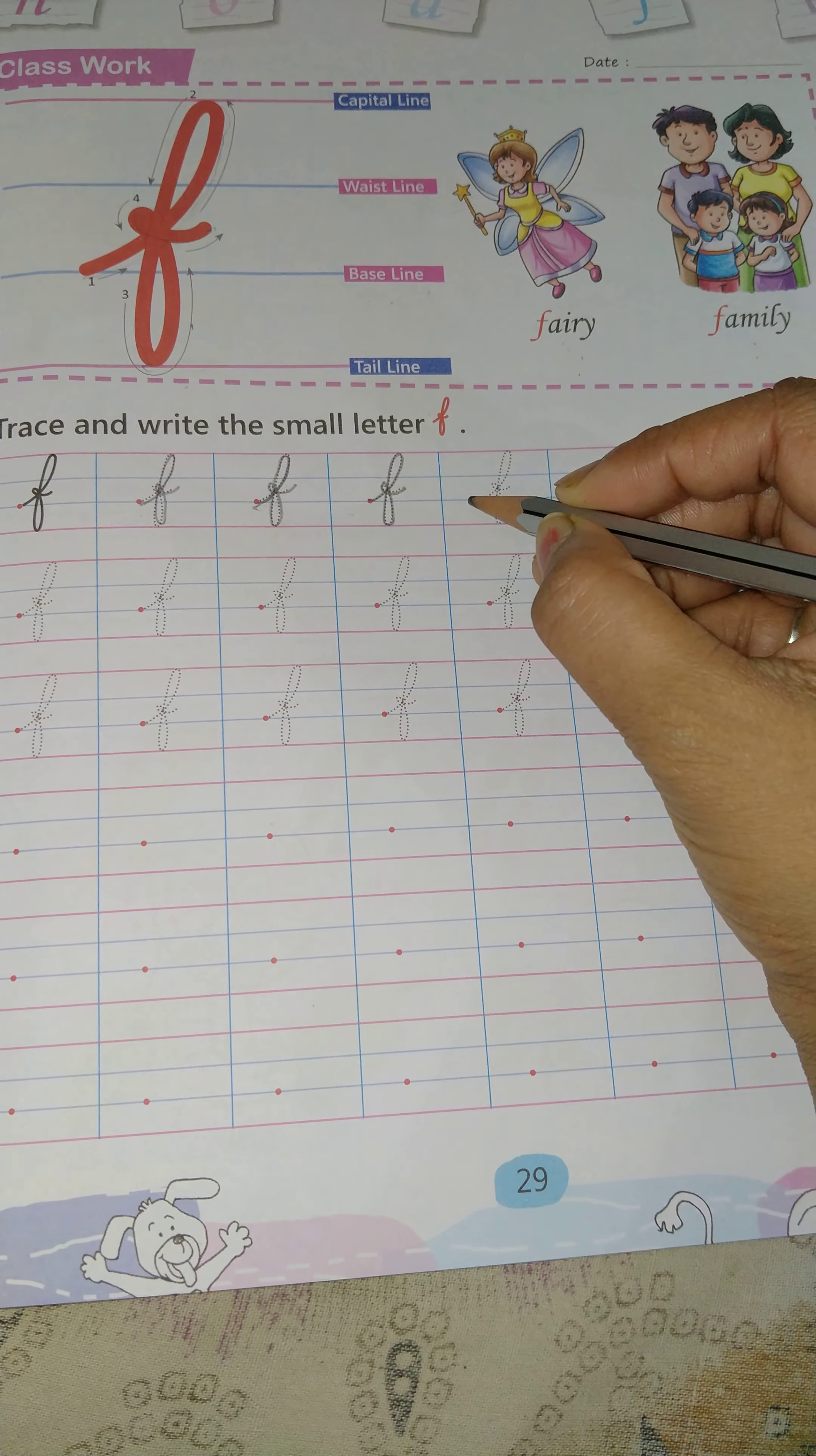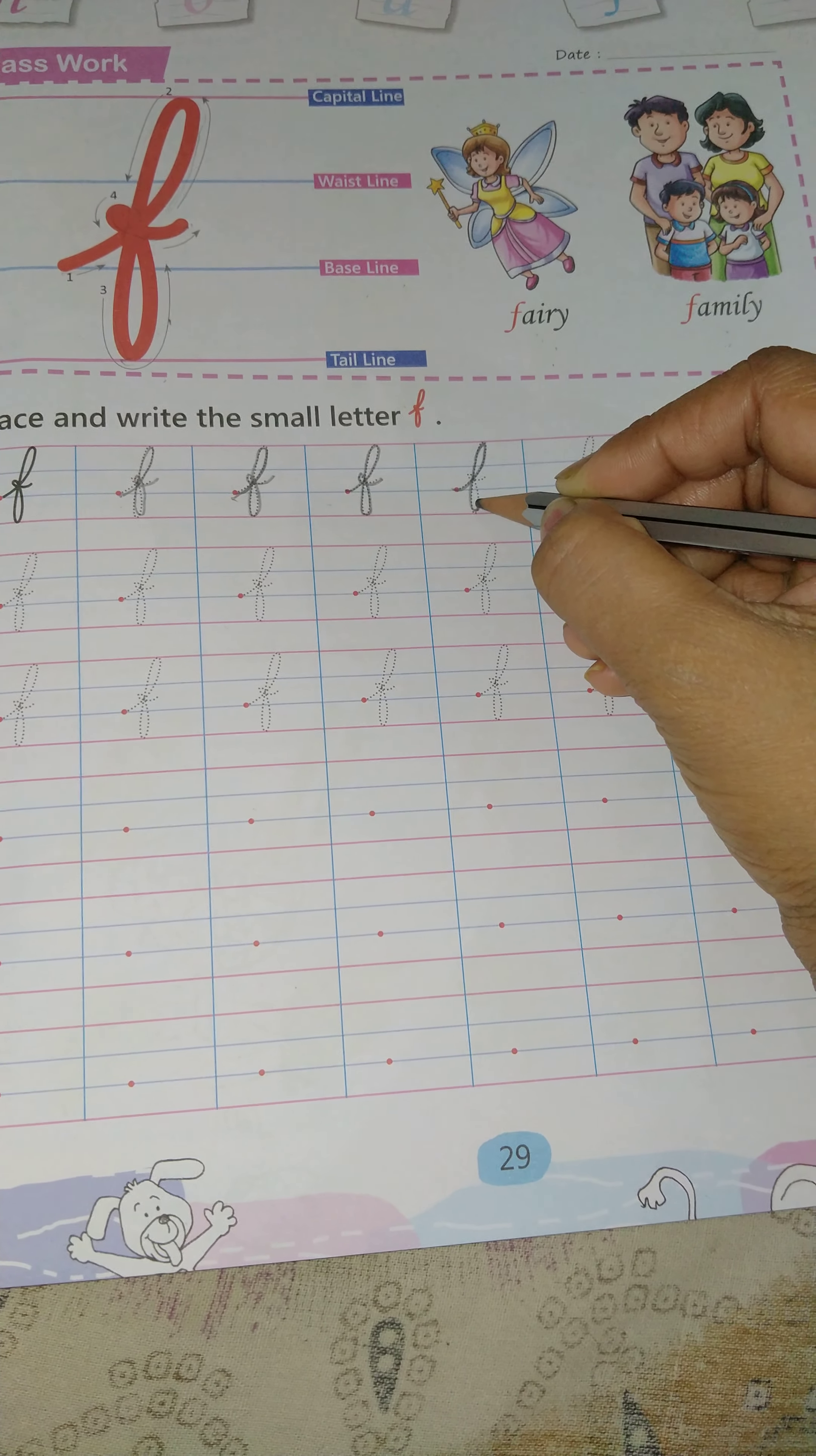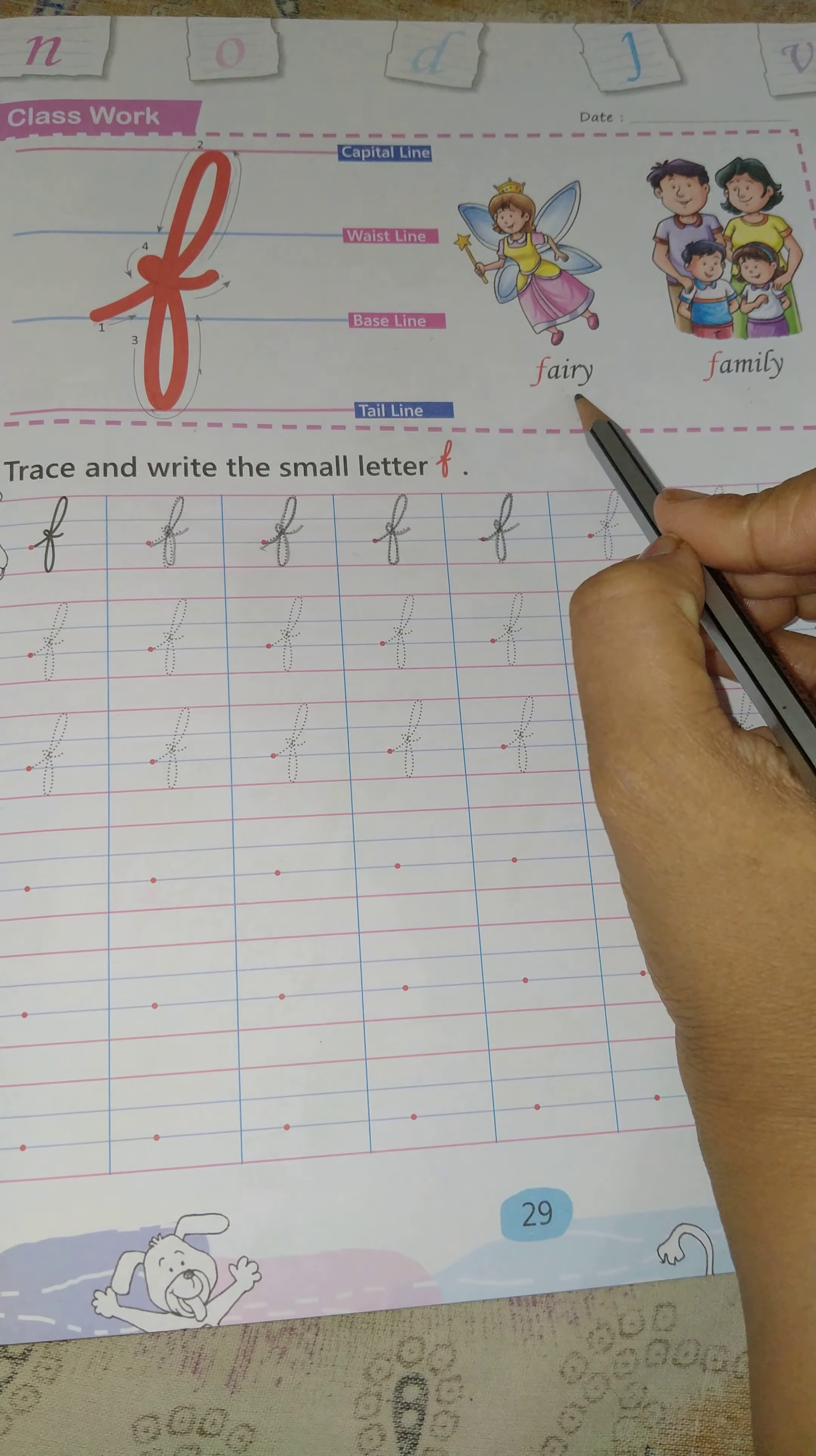One more time I will show. From the baseline we have to start. Down, tail line, like this. Fine. This is cursive F. F for fairy, F for family.